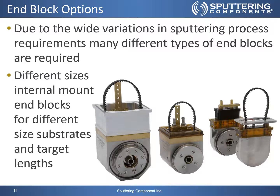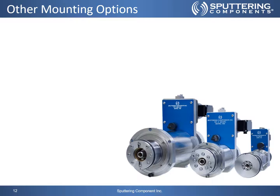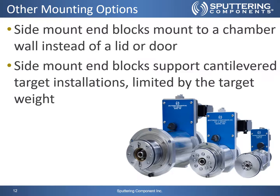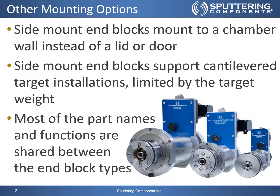Due to the wide variation in sputtering process requirements, many different types of end blocks are required. SCI supplies different size internal mount end blocks for different sized substrates and target lengths. The larger end block assemblies are able to support longer targets and deliver substantially higher power and higher cooling water flow rates to the target tubes. When using an internal mount cathode is not an option, side mount end blocks can often be used. Side mount end blocks mount to a chamber wall instead of a lid or door assembly and support cantilevered target installations, which are limited by the target weight. Most parts and functions are shared between the different types of end blocks reviewed.